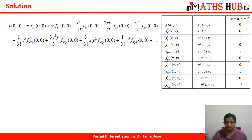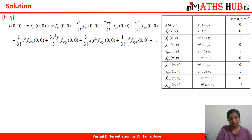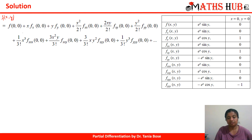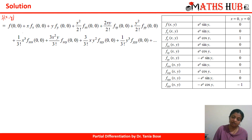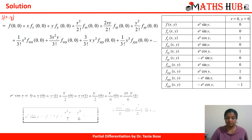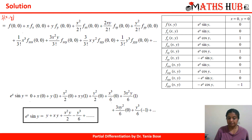Putting it back into the Taylor series expression: f(x, y) = f(0,0) + x·fx(0,0) + y·fy(0,0) + x²/2!·fxx(0,0) + 2xy/2!·fxy(0,0) + y²/2!·fyy(0,0) + x³/3!·fxxx(0,0) and further terms. After substituting the values from the table, we get the expansion as y + xy + x²y/2 − y³/6.